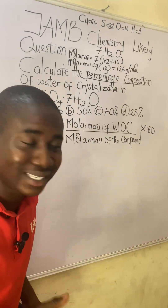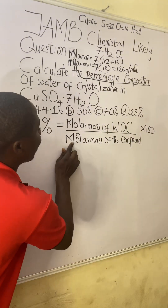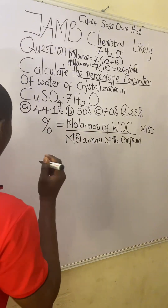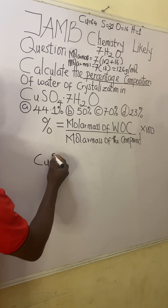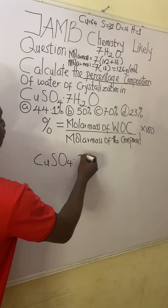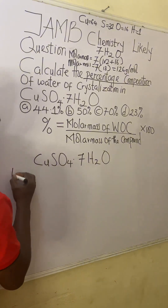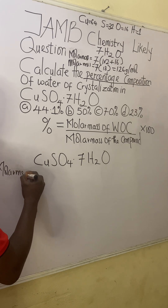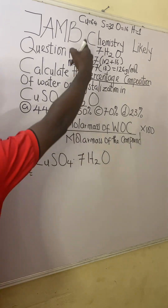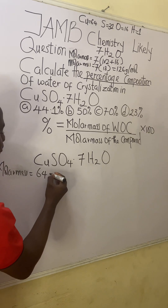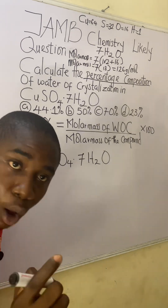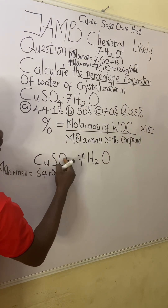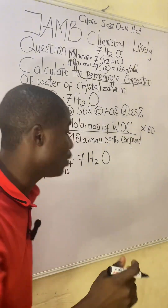Next, calculate the molar mass of the full compound CuSO₄·7H₂O. The molar mass of the full compound is: copper = 64, plus sulfur = 32, plus oxygen × 4 = 16 × 4.